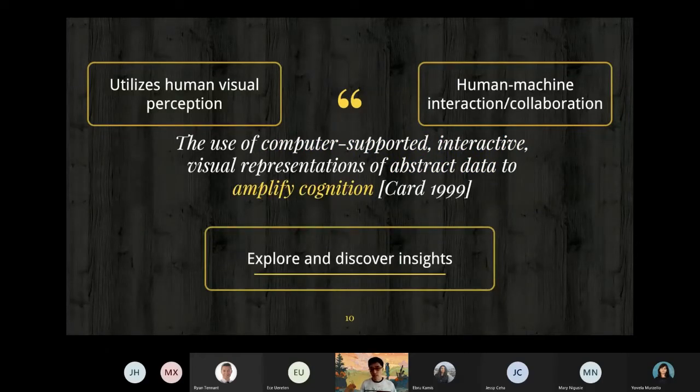Which brings to our final key point in this definition: amplify cognition. The ultimate goal of information visualization is to explore and discover insights in complicated data. In general, we want to improve human efficiency and overcome human limitation in processing massive information.